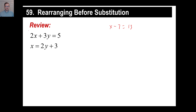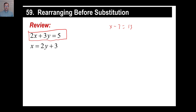But if you have an equation that has two variables, you can't really solve that. There's an infinite number of solutions because you could always put something in for x and then something else for y would work. For example, if you had 1 for x, 2 times 1 is 2, so 2 plus 3 times something would be 5. That means 3y would be 3, so y would be 1.